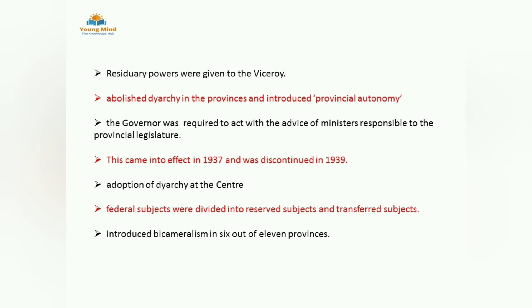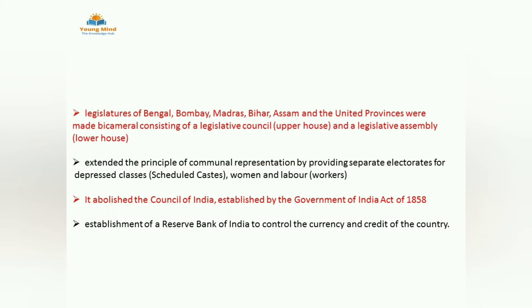Residuary subjects were given to the Viceroy. Dyarchy was also abolished in provinces, and provincial autonomy was introduced — the Governor should act on the advice of ministers who were responsible to the provincial legislature. But this was in existence only for two years — 1937 to 1939. Again, adoption of Dyarchy started at the centre, and the federal subject list was divided into reserved and transferred subjects. Bicameralism was introduced in six out of eleven provinces.